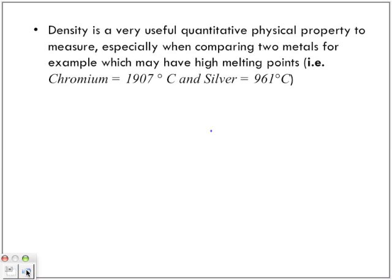Density is a very useful quantitative physical property to measure, especially when comparing two metals. For example, metals that have the same type of high melting point: chromium has a melting point of 1907°C, silver has a melting point of 961°C. Even though they both have a very high melting point, and even though one is as high as an extra thousand degrees Celsius difference from the other, they still look very similar.